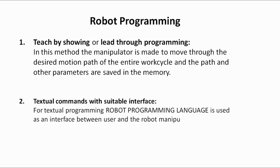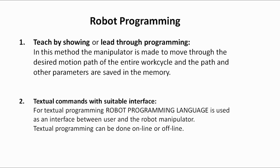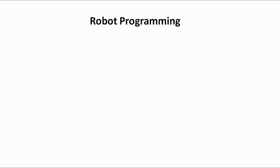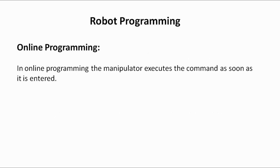In the second method — textual commands — a robot programming language serves as an interface between the user and the robot manipulator. A programmer uses a robot programming language and writes code according to the required task to be done by the manipulator. This textual programming can be done in two ways: online or offline.